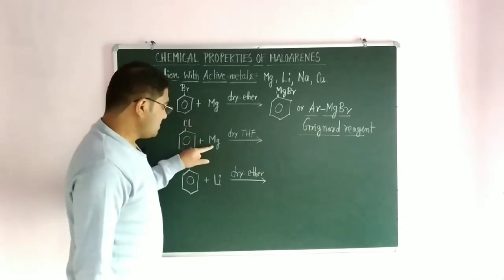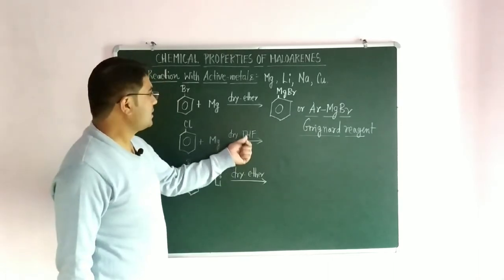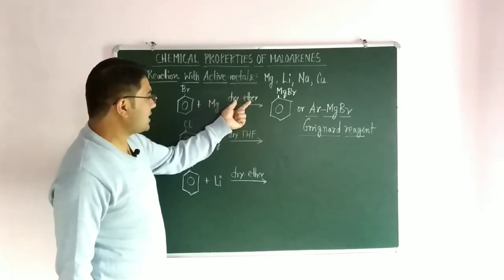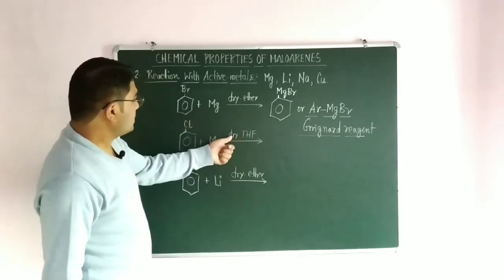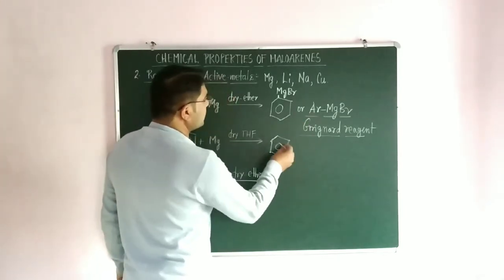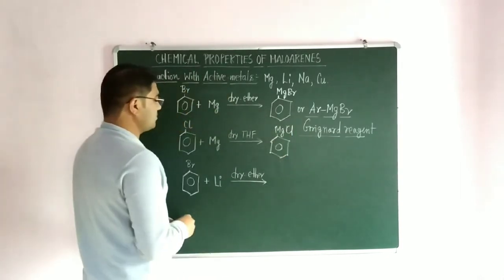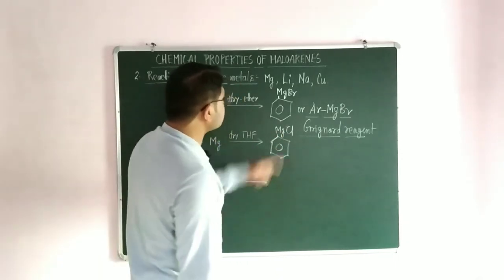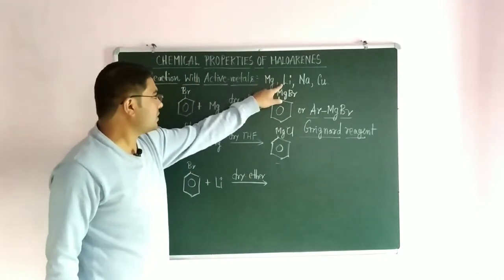A similar reaction occurs for chlorobenzene when treated with magnesium. In the case of bromobenzene the medium is dry ether, while for chlorobenzene the reaction is carried out in the presence of dry THF (tetrahydrofuran). The product formed is the Grignard reagent, here ArMgCl.